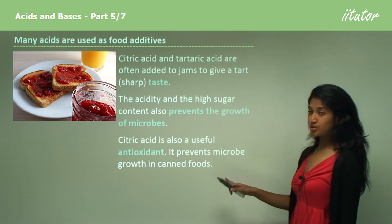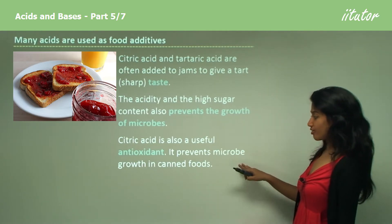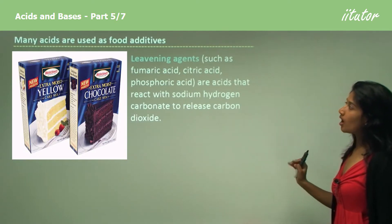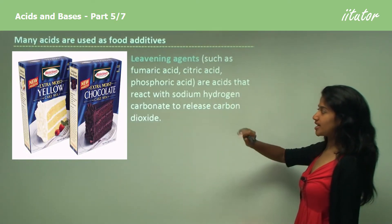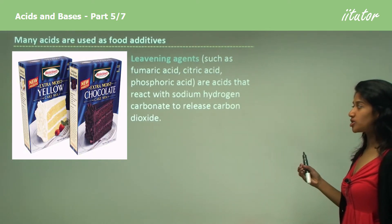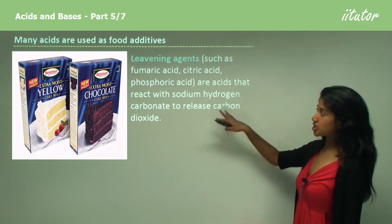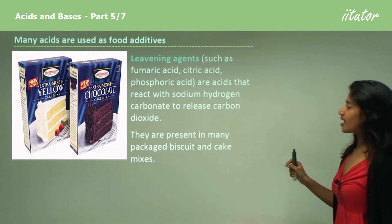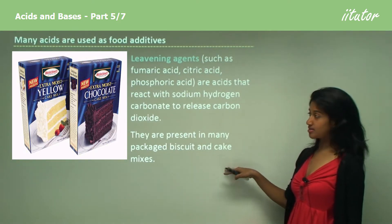Citric acid is also a useful antioxidant and prevents microbe growth in canned foods. As leavening agents, we have fumaric acid, citric acid, and phosphoric acid. These acids react with sodium hydrogen carbonate to release carbon dioxide, and this reaction makes them leavening agents. They are present in packaged foods such as biscuits and cake mixes.